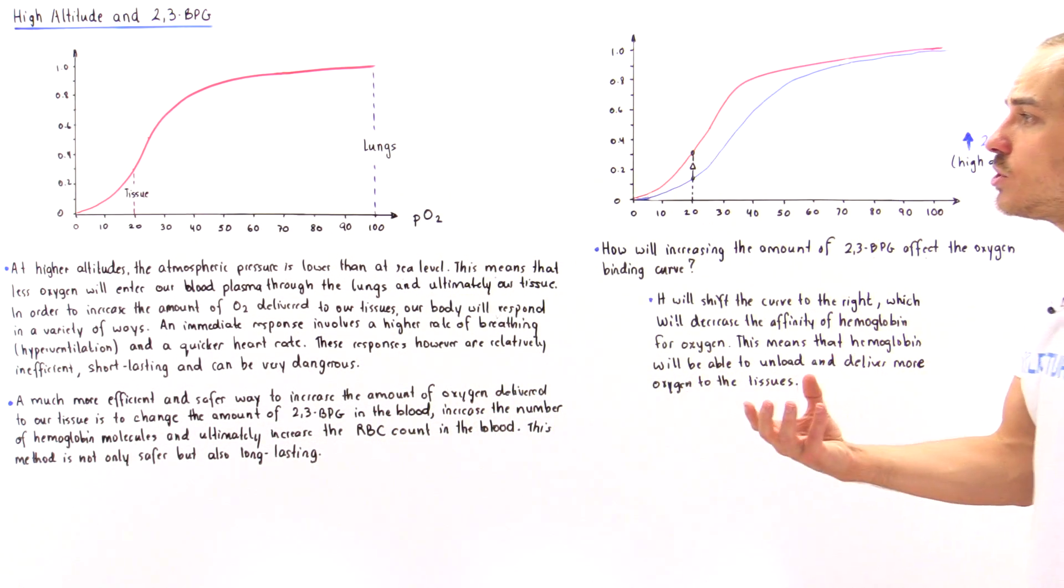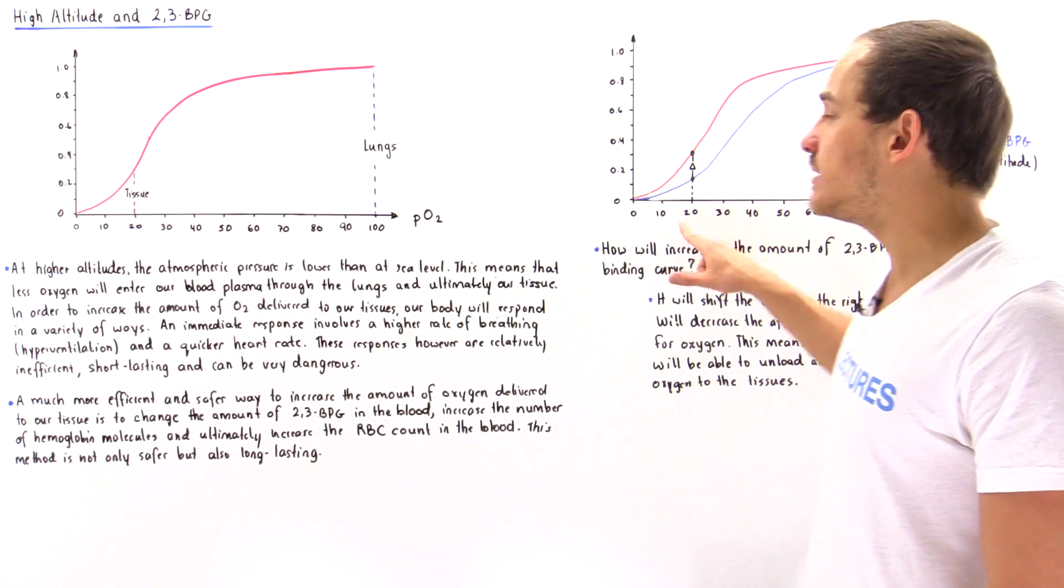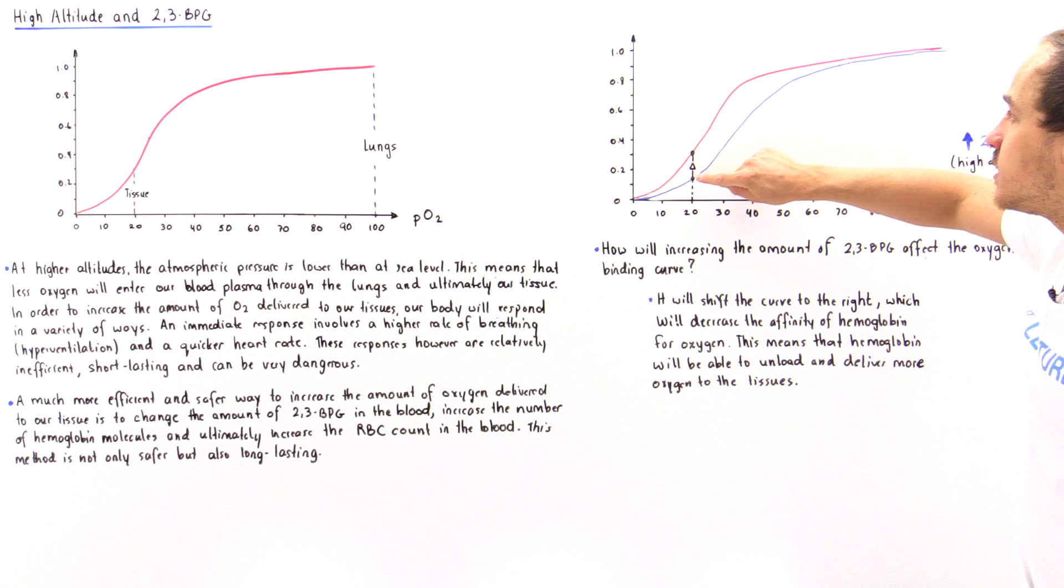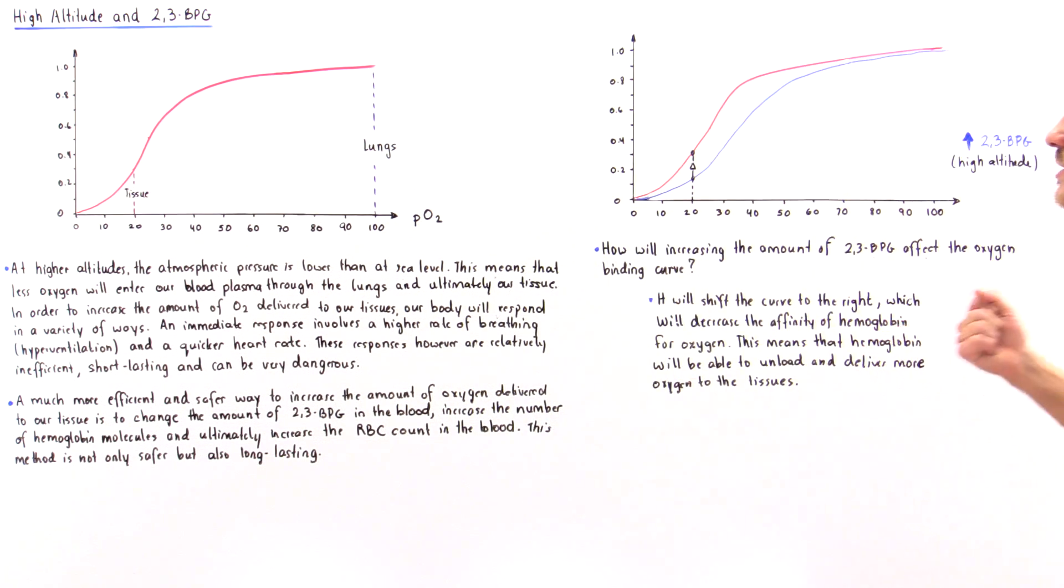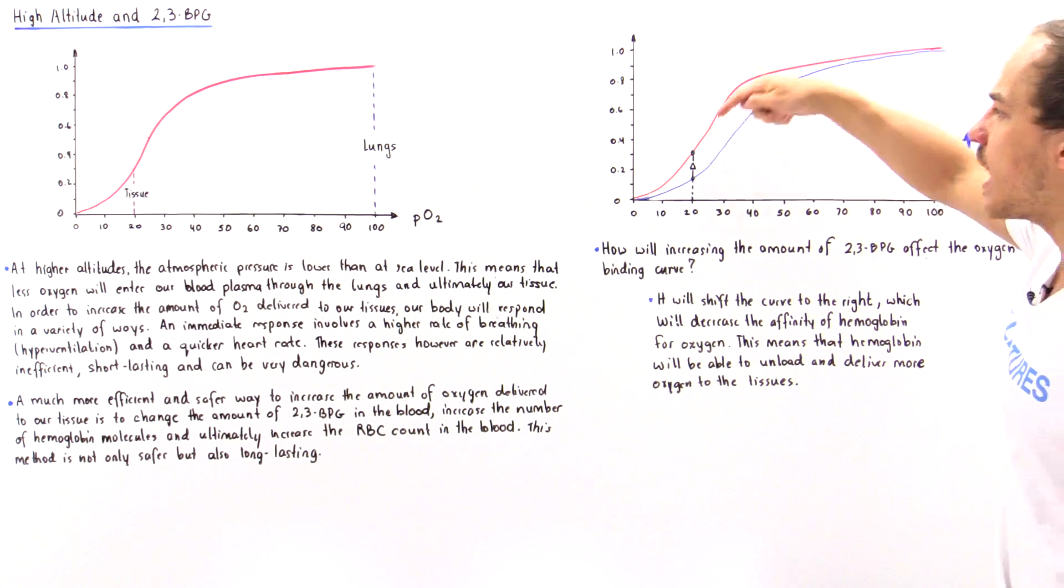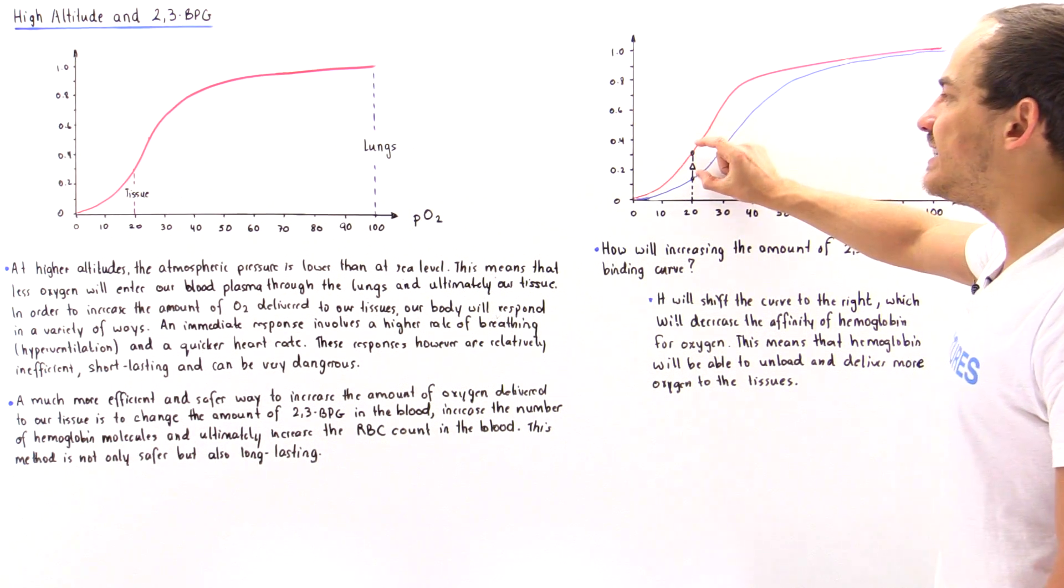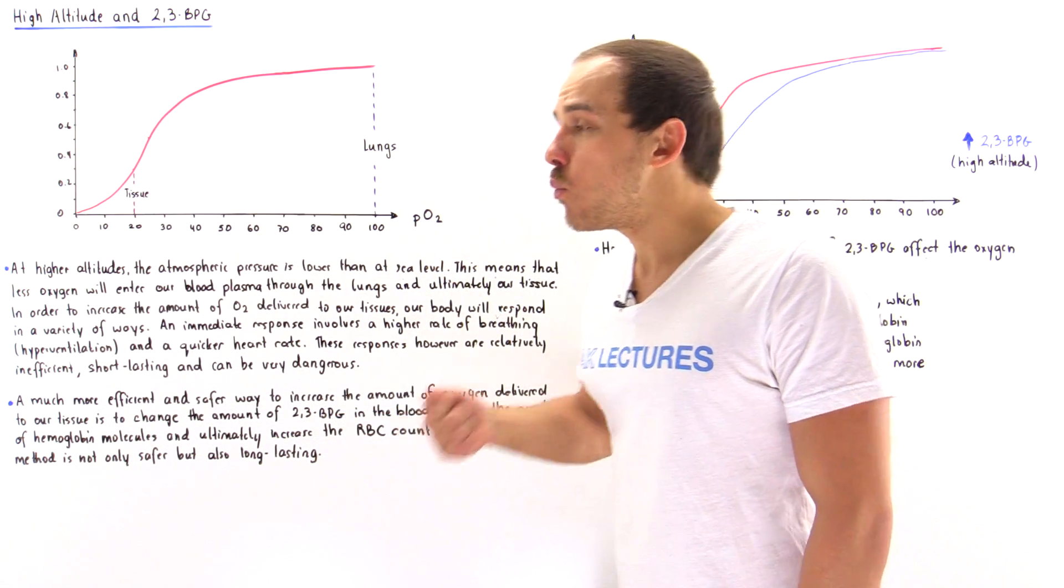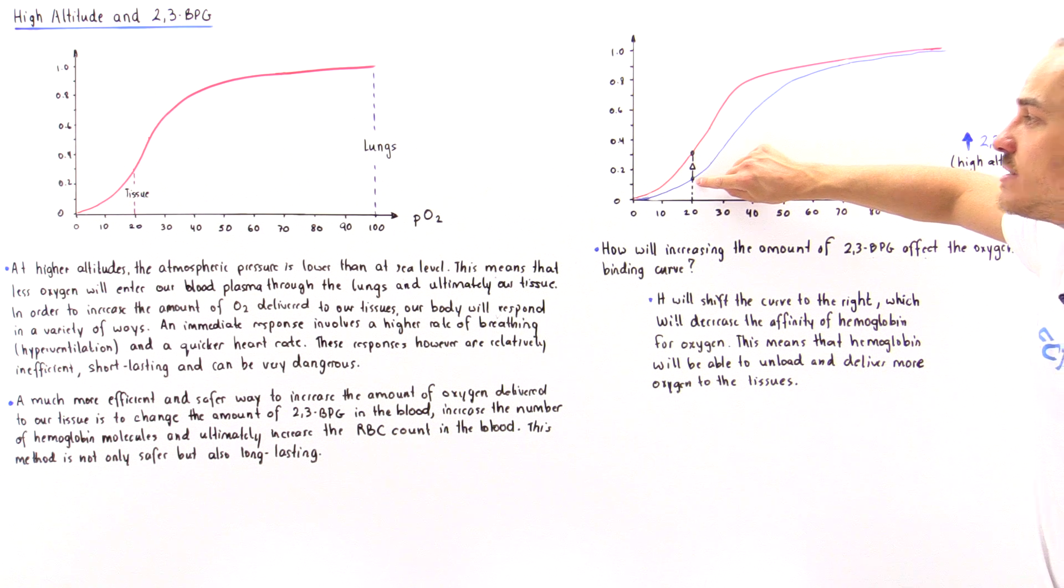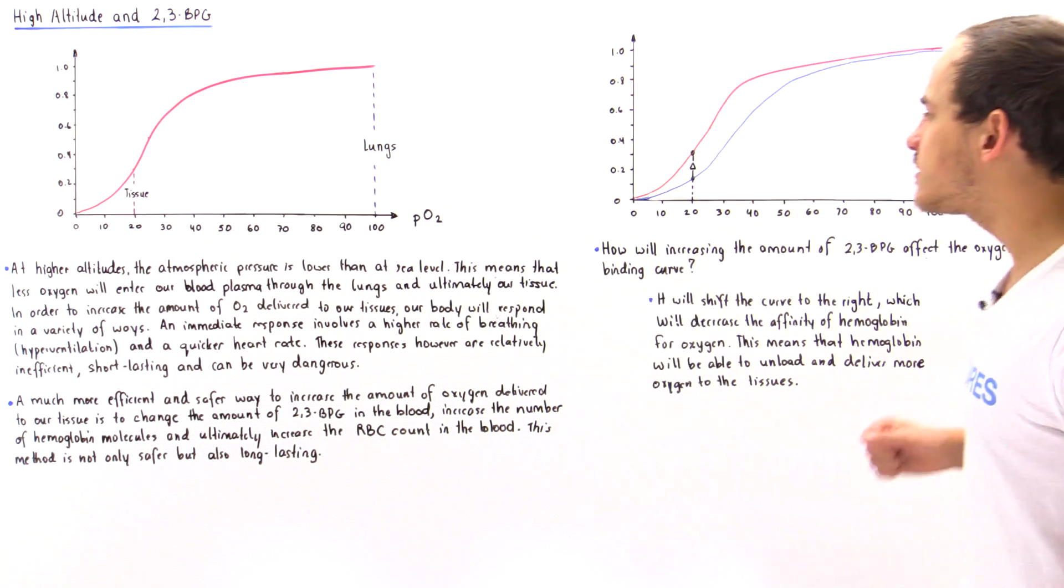What that means is if hemoglobin is less likely to be bound to oxygen at a partial pressure of 20 millimeters of mercury, which is the partial pressure inside our exercising tissue, this point on the blue curve will have a lower Y value than the red curve. That means more of the hemoglobin will unload and release that oxygen to the tissue. The red curve describes a Y coordinate of about 0.32, and the blue curve describes a coordinate point of about 0.1. There's a difference of 22% according to this graph, and that means 22% more of the hemoglobin will unload the oxygen in this situation when we have a higher concentration of 2,3-BPG inside our blood.